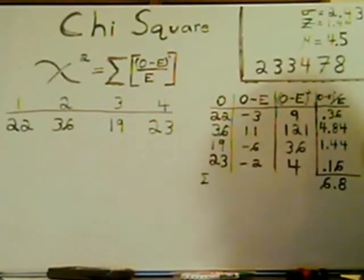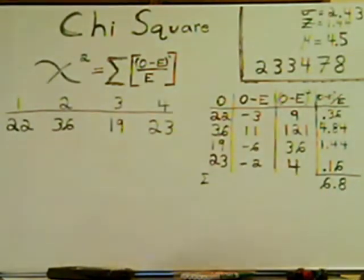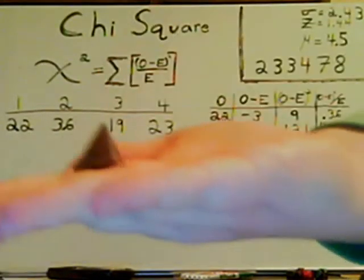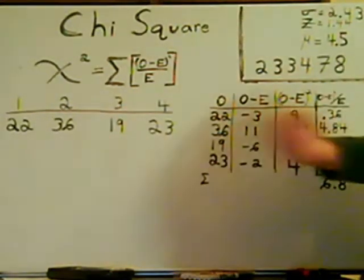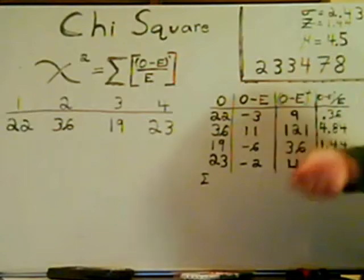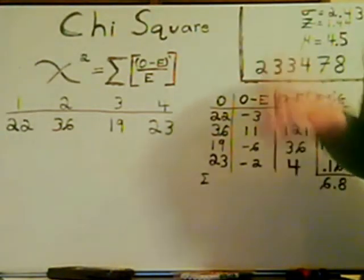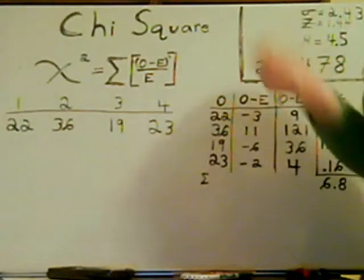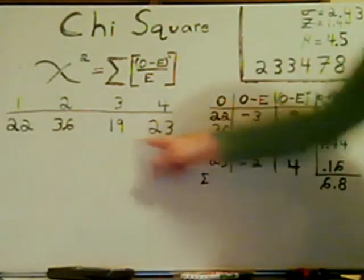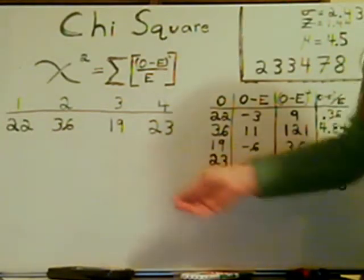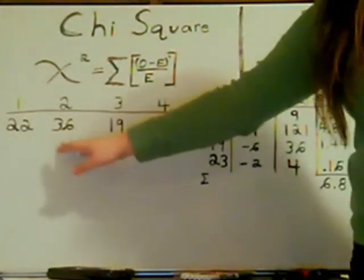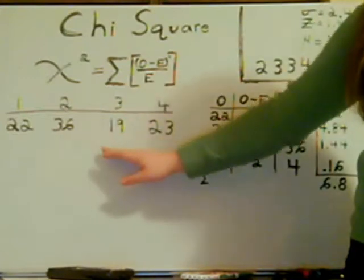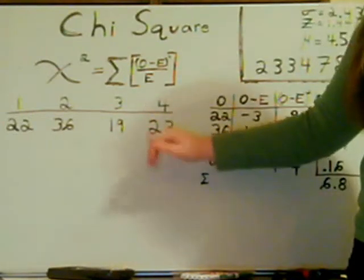For example, I play Dungeons and Dragons, so I use a myriad of dice. One of the die is a d4, a four-sided die. And since I'm the dungeon master, I want to see if all of my players are using fair dice. So I take a d4 and I roll it a hundred times. Here's the results. Twenty-two times I got a one, thirty-six times I got a two, nineteen times I got a three, twenty-three times I got a four.